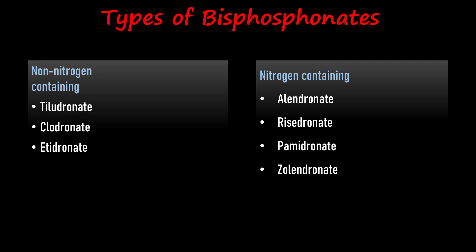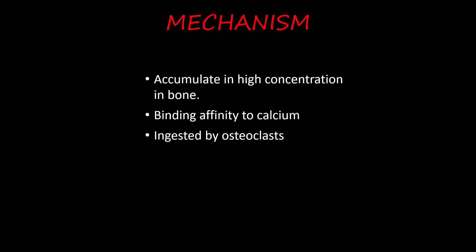Bisphosphonates are classified into two types depending upon their chemical composition. Number one is non-nitrogen containing — these are the classical ones. Number two is nitrogen containing. The non-nitrogen containing includes tiludronate, clodronate, and etidronate. The nitrogen-containing bisphosphonates include alendronate, risedronate, pamidronate, and zoledronate.